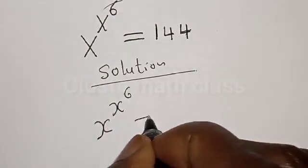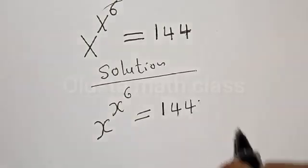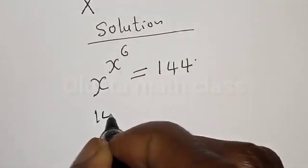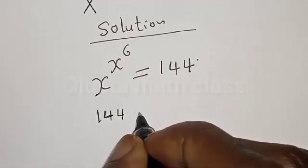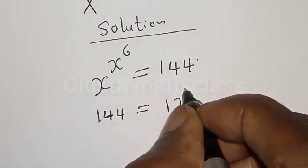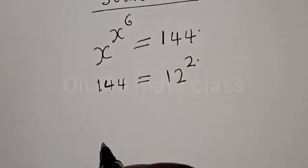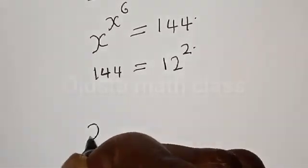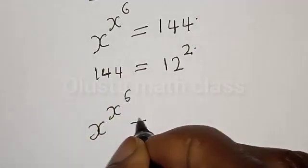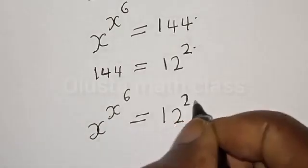We have the given equation: s raised to power s raised to power 6 is equal to 144. Note that 144 is equal to 12 squared, so the right hand side becomes 12 squared. We have s raised to power s raised to power 6 is equal to 12 squared.